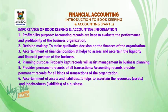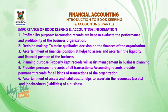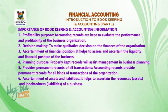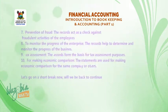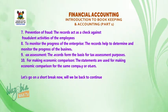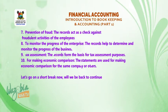Five, provides permanent records of all transactions — accounting records provide permanent records for all kinds of transactions of the organization. Six, ascertainment of assets and liabilities — it helps to ascertain the resources, assets, and indebtedness (that is, liabilities) of a business. Seven, prevention of fraud — the records act as a check against fraudulent activities of the employees.